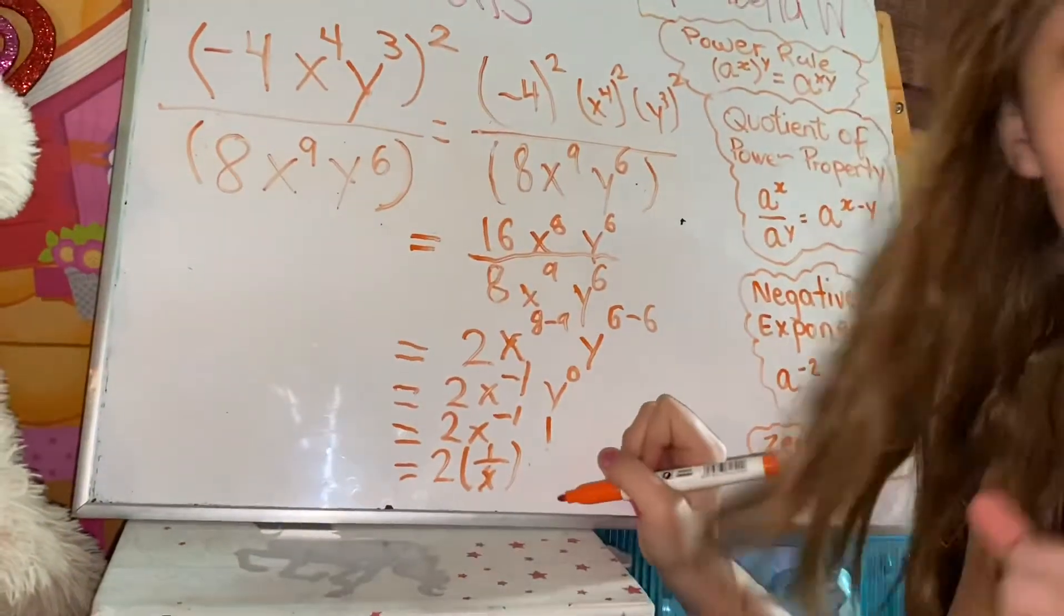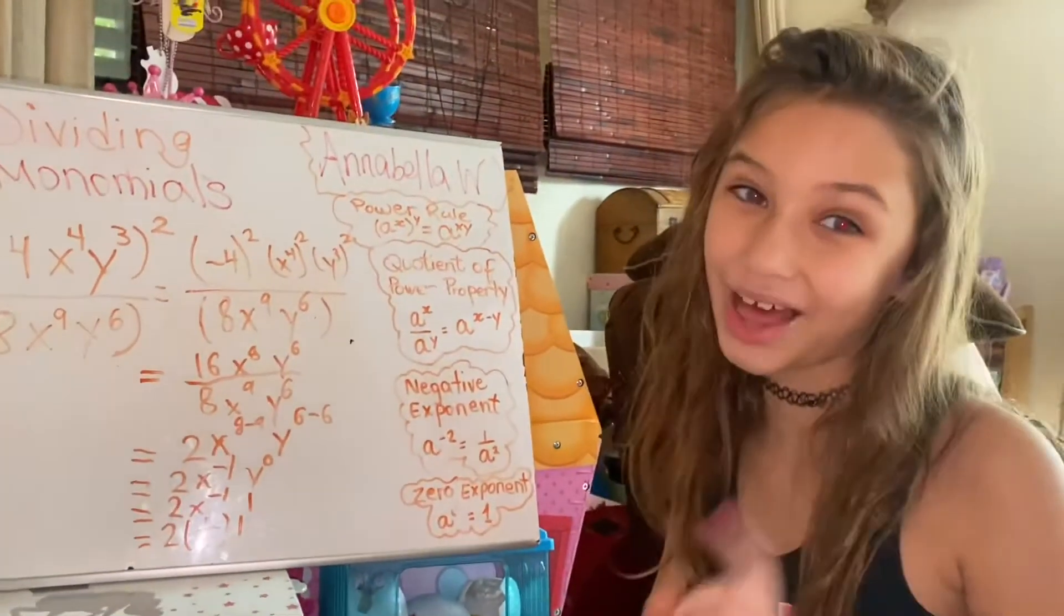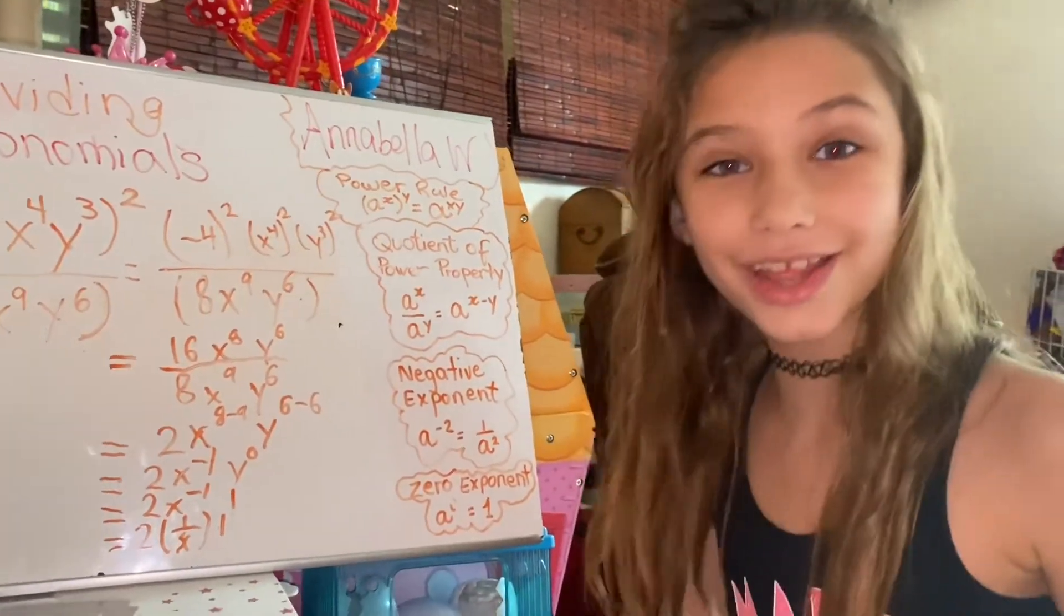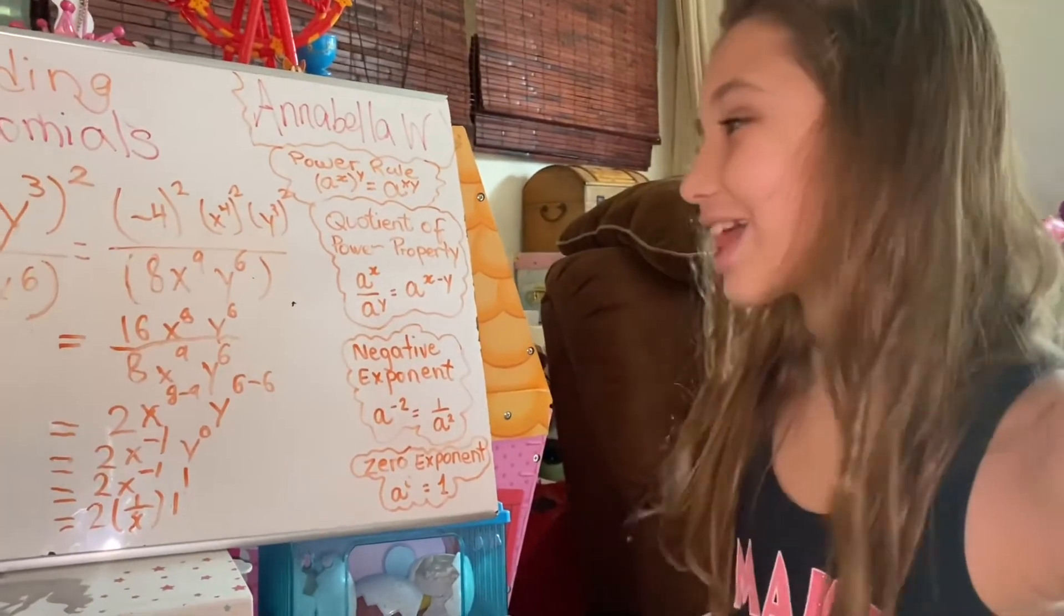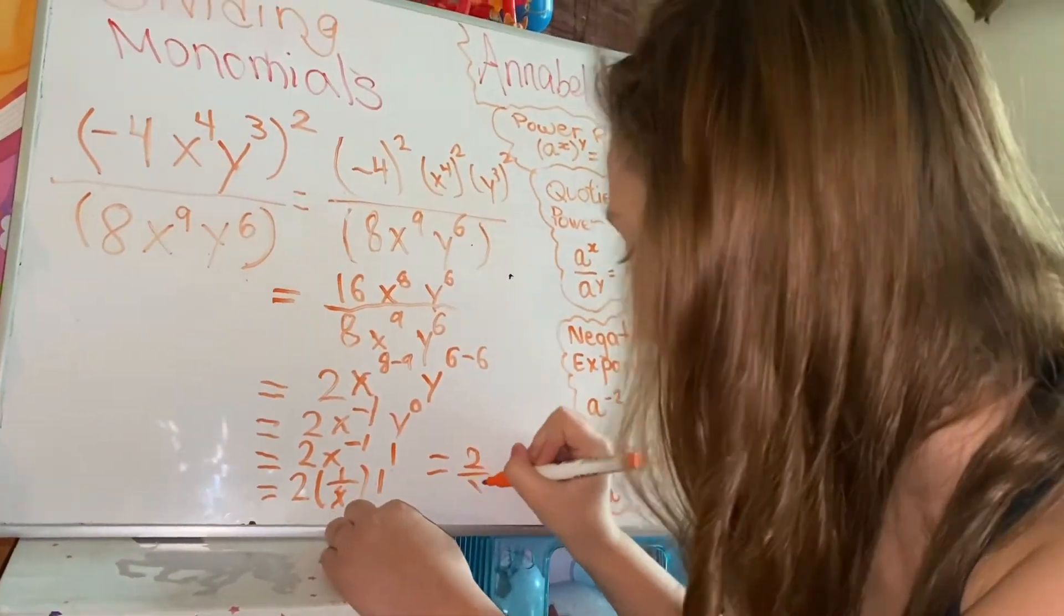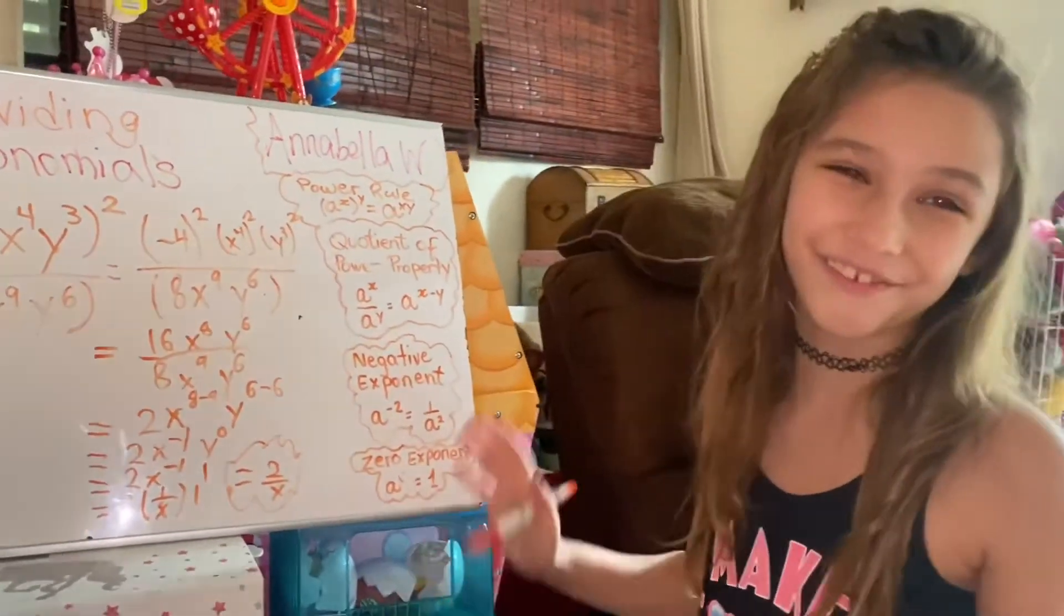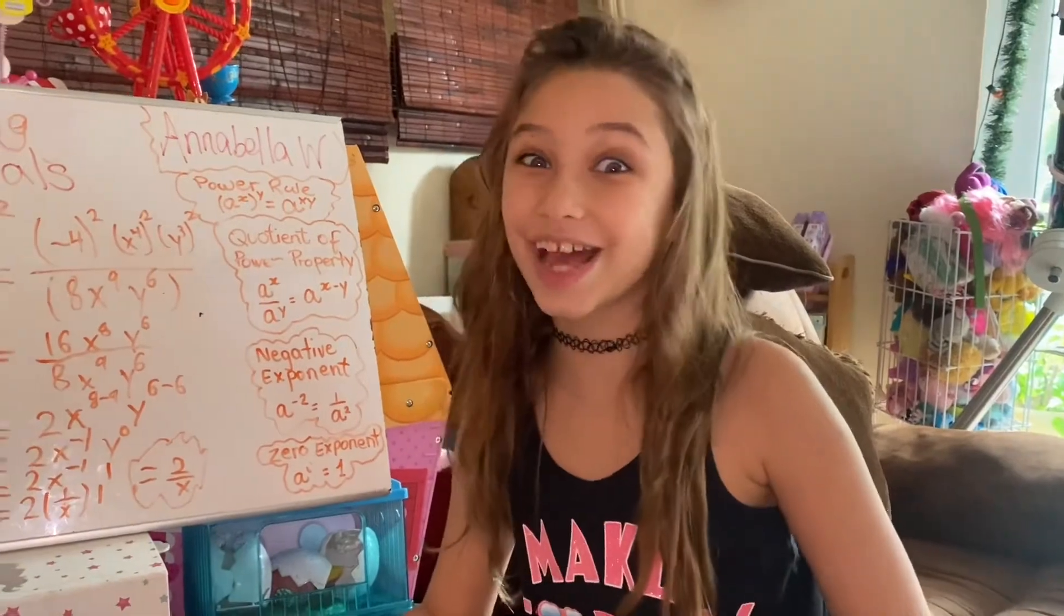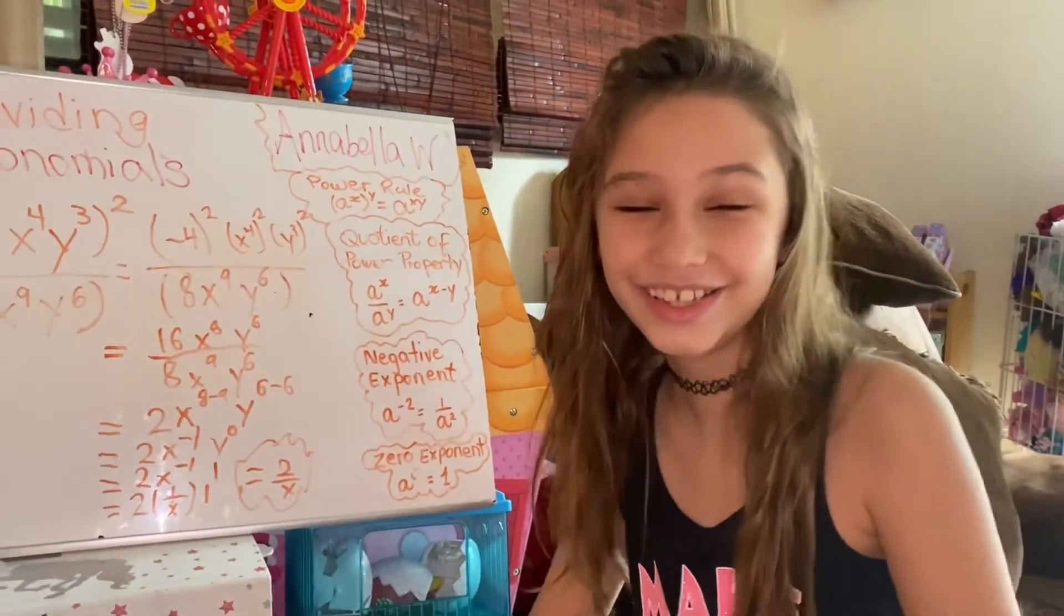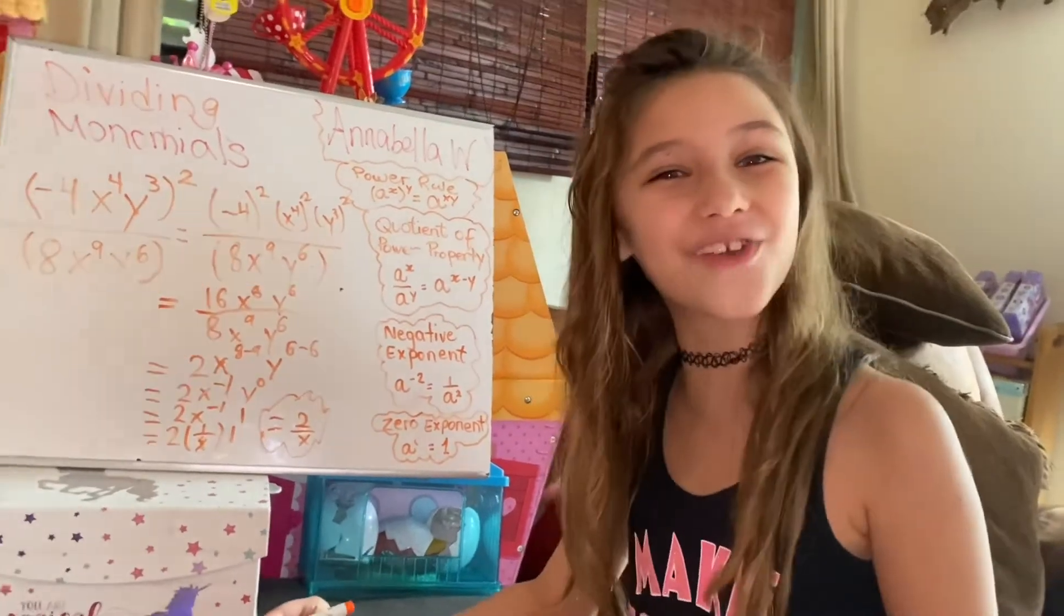Now we need to multiply. So here's our answer: 2 over x. Easy, right? This time we're really done. Bye! See you soon. Don't forget to subscribe.